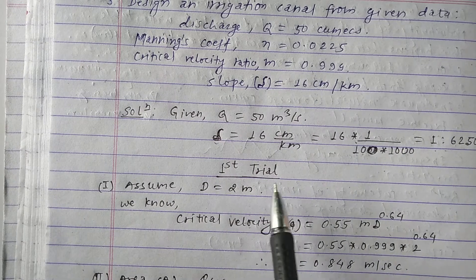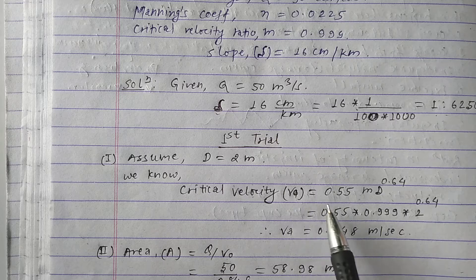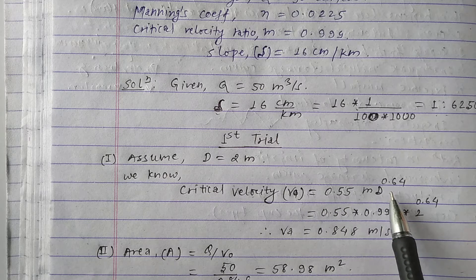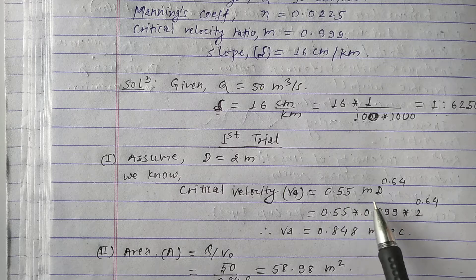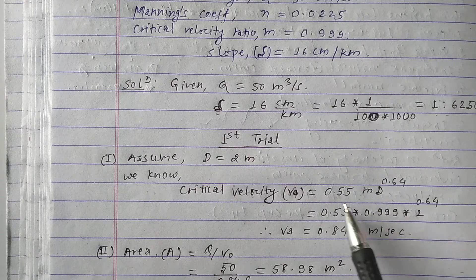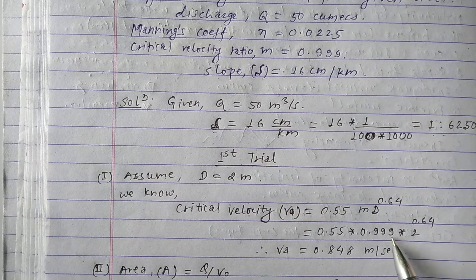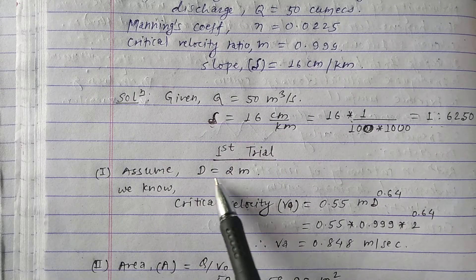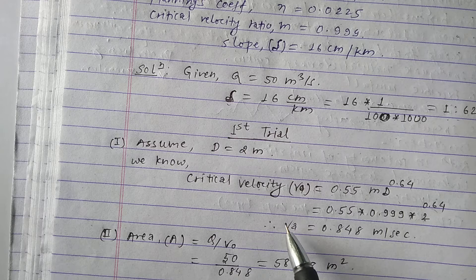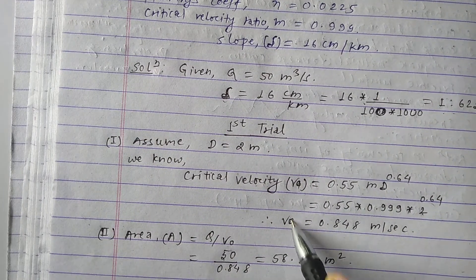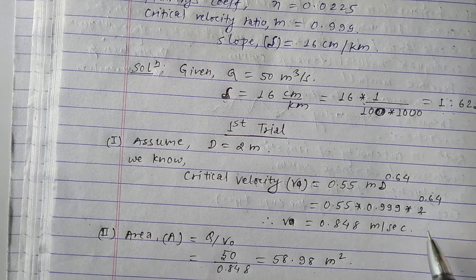Now we take the first trial. Let us assume the depth d = 2 m. The critical velocity formula is V₀ = 0.55 × m × d^0.64. Substituting m = 0.99 and d = 2 m: V₀ = 0.55 × 0.99 × 2^0.64. After calculating, we get the critical velocity V₀ = 0.848 m/s.